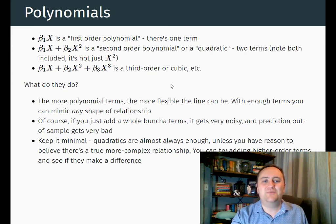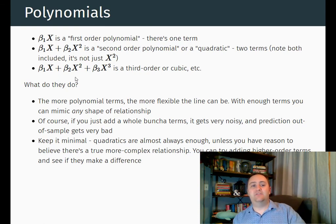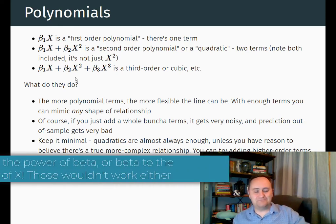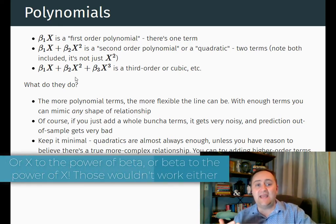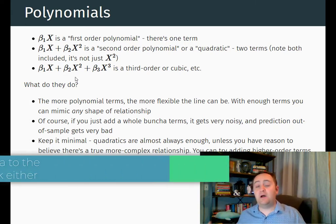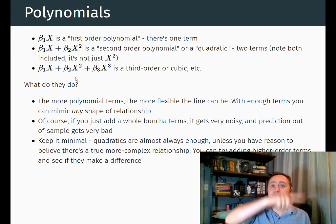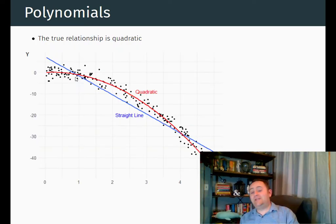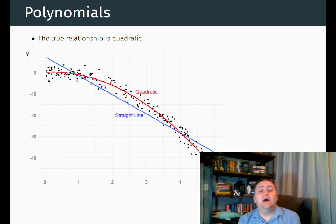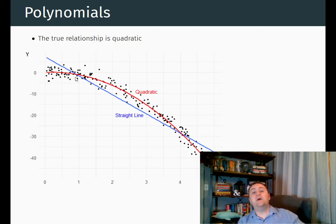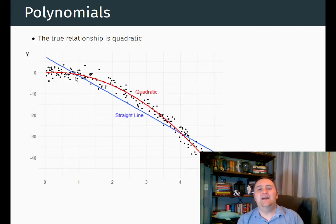When I say linear in parameters, I mean each parameter is just itself multiplied by a variable — there's no beta squared or two to the power of beta, just beta. We can add x and x squared, and that will help us fit a parabolic line. We could add a cubed term to fit a cubic line. And when we do that, we get a curvy line out of our ordinary least squares regression because we're adding a polynomial term — an x squared term — that helps us map out this squared, parabolic relationship in the data.